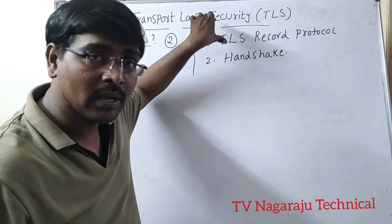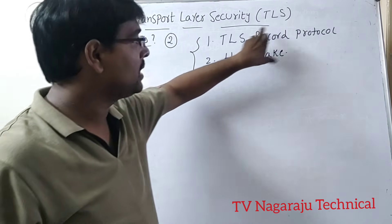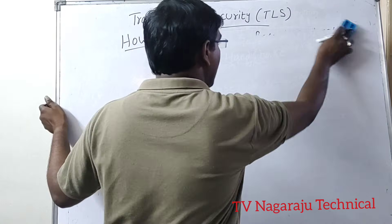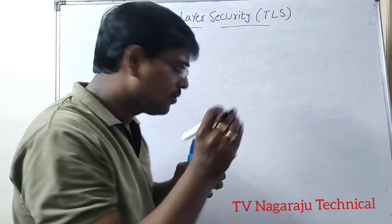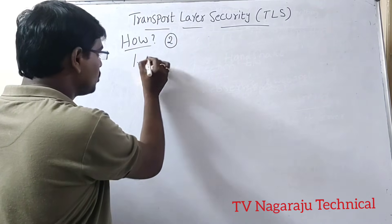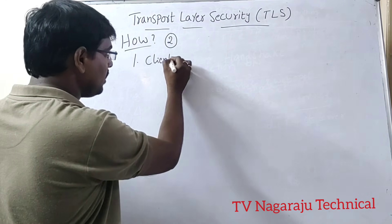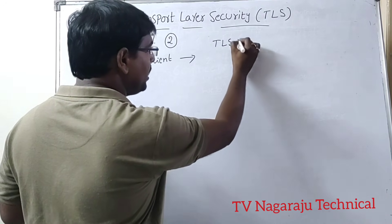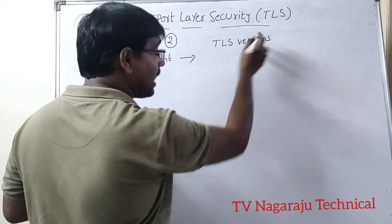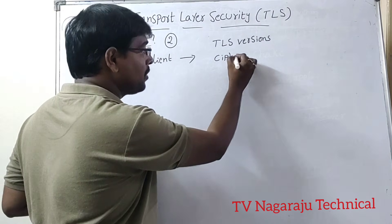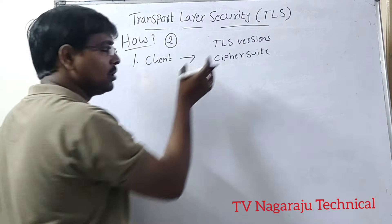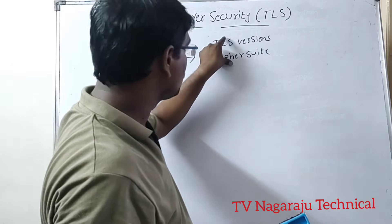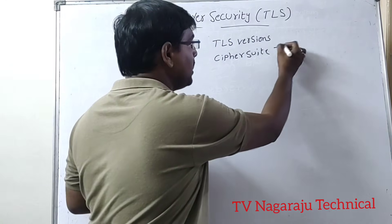These are similar to SSL — TLS Record Protocol and TLS Handshake Process. In the handshake process, in the first step, the client sends information to the server: different versions of TLS along with suggestions of a cipher suite. These are generated by the client and sent to the server.